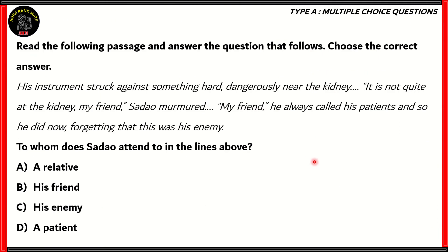Let's look at our first question. Read the following passage and answer the question that follows. Choose the correct answer. 'His instrument struck against something hard, dangerously near the kidney. It's not quite at the kidney, my friend,' Sadao murmured. 'My friend,' he always called his patients, and so he did now, forgetting that this was his enemy.